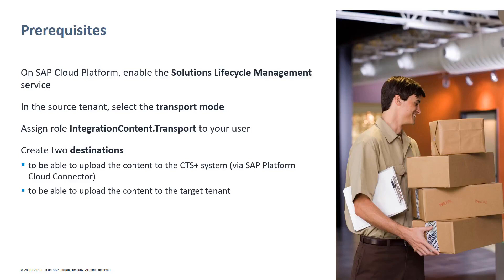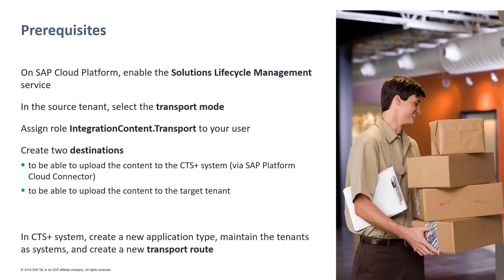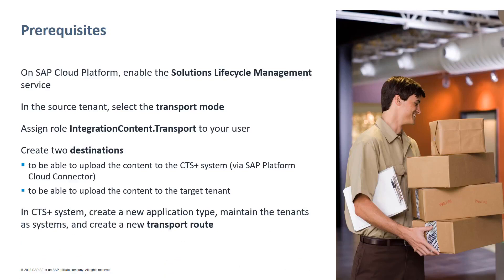In a three-tier landscape, this would be for the test and the production tenant. Finally, in the CTS Plus system, you need to create a new transport route between your source and your target tenant. For this, you need to create a new application type — you may name it CPI, for instance — and two systems need to be created representing the two tenants.